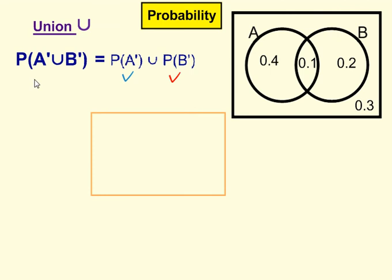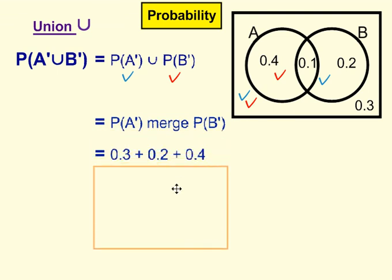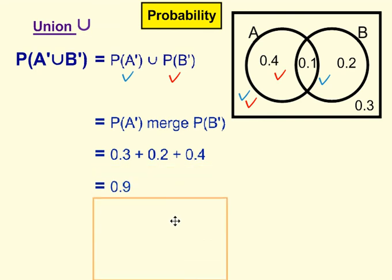Fourth example: probability of not A union with probability of not B. Break it apart, tick everywhere that is not A — that's not A, and that's not A — and tick everywhere that's not B. So that's not B, and this isn't B either. The rule of union: we add up all the ticks anywhere that there's a tick — 0.3 plus 0.2 plus 0.4 — and that's going to give us 0.9.